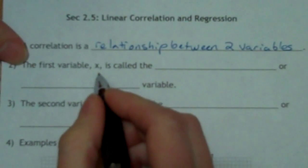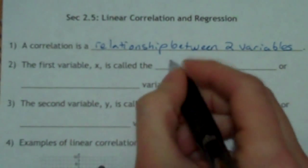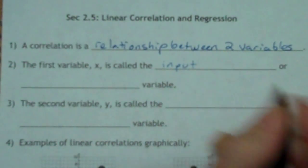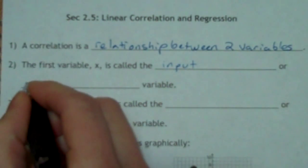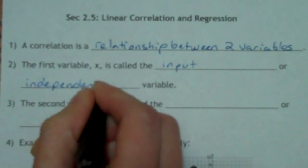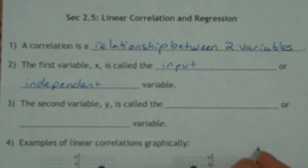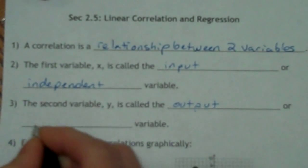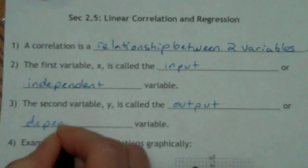So the first variable, x, there's a lot of different things we could call it, but in this class we're either going to call it the input, or we're going to call it the independent variable. Independent, because it does not depend on the other one. The second variable, y, is called the output, or the dependent variable.